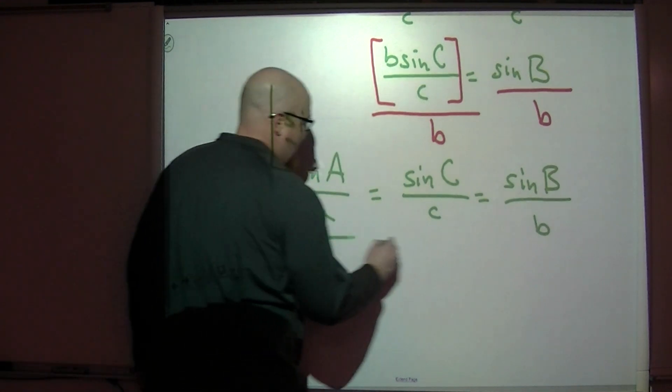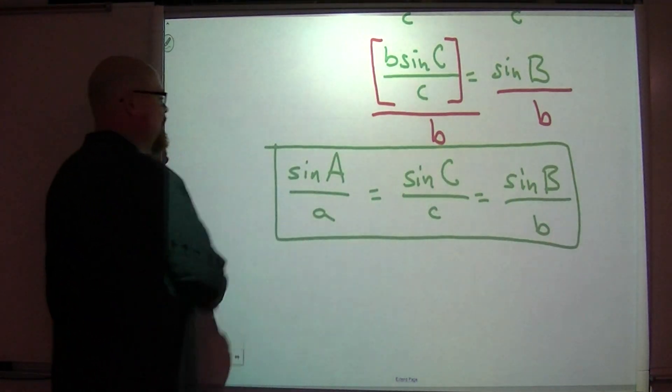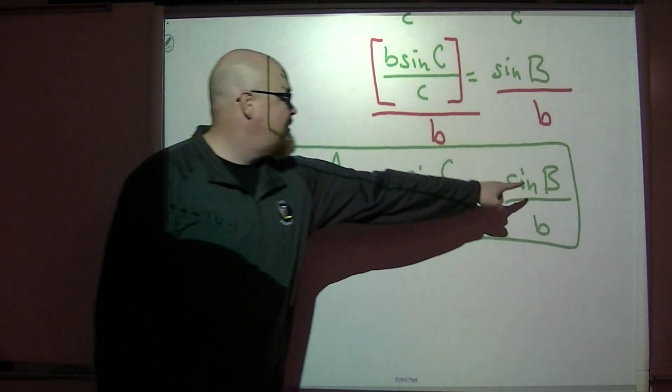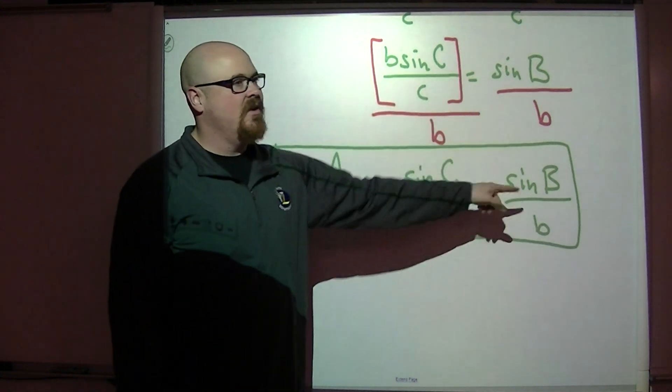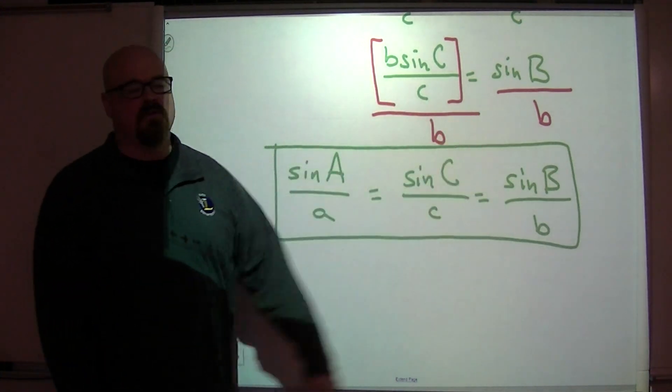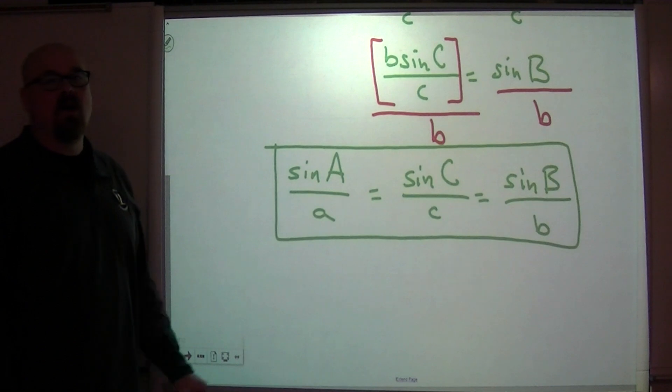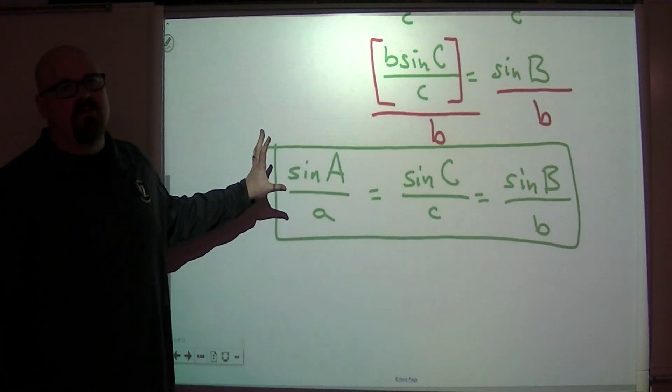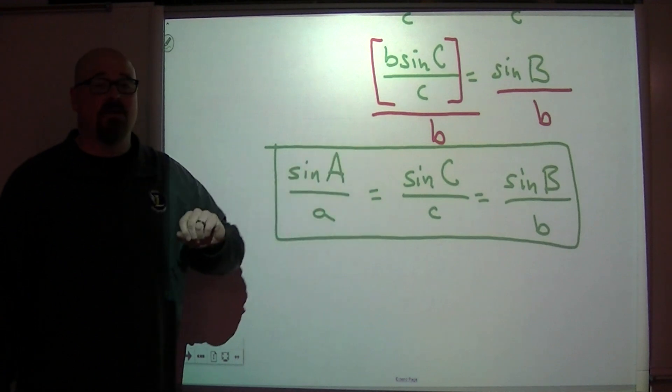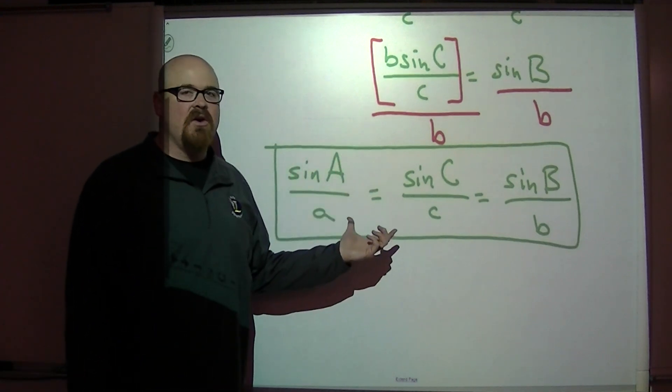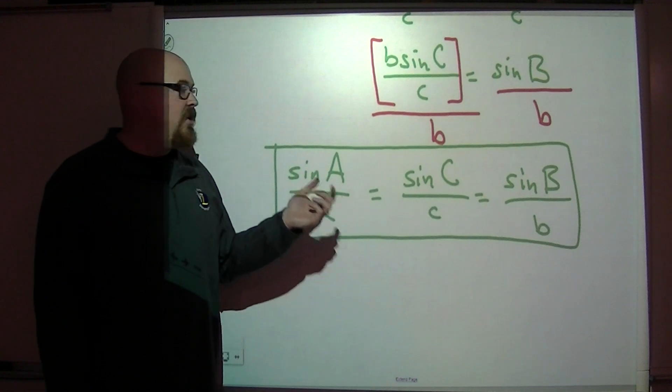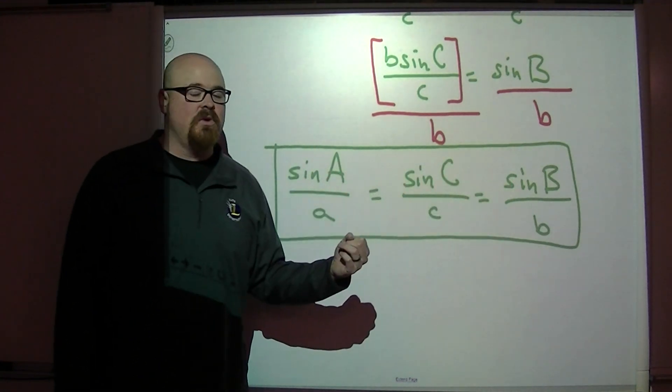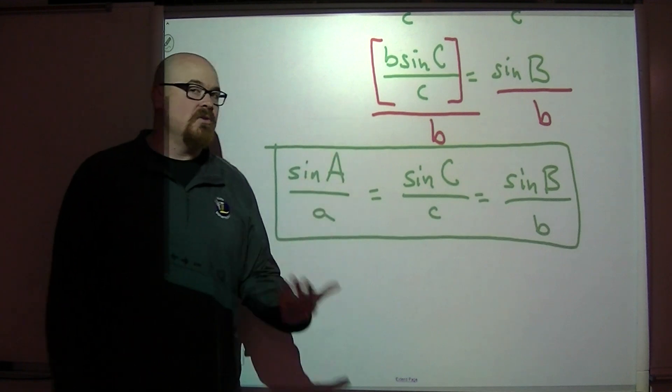But the law of sines kind of puts all three of those statements together as one big transitive statement saying, if this is equal to this, if this is equal to this, then this is equal to this, and they're all equal to each other. This is the law of sines. Now we don't actually ever solve the entire proportion at once. We can only use two of these ratios at a time. But you can choose any two of these ratios to set equal to each other to solve the triangles that we're going to be doing.